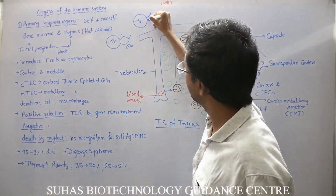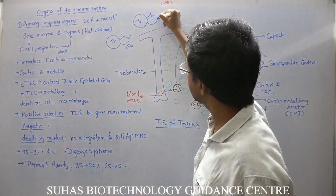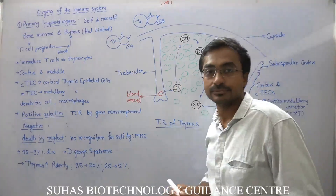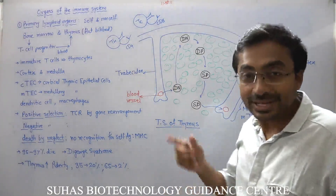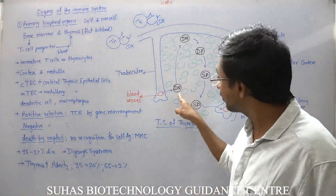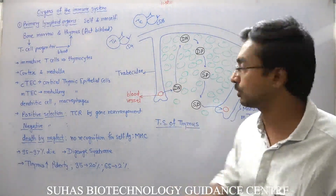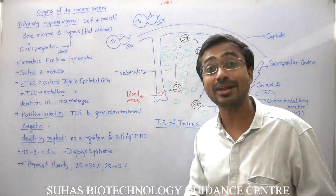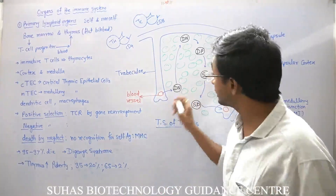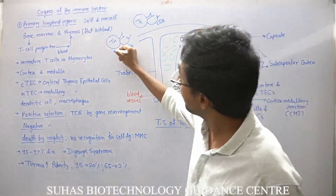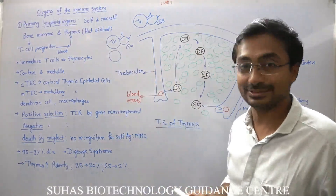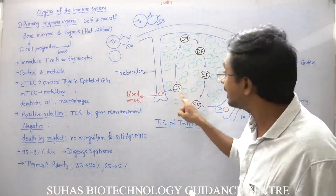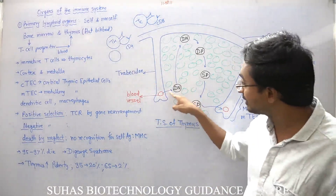But initially, neither CD4 nor CD8 is present on the immature T-cell progenitor, and that's why it is called double negative — both are absent. This immature lymphocyte will travel from the corticomedullary junction to the subcapsular cortex region.